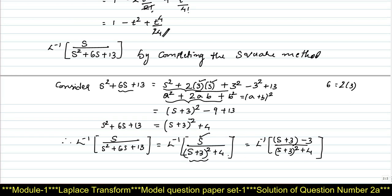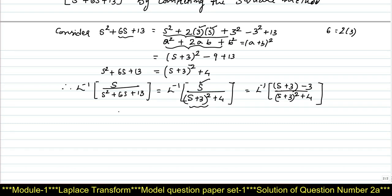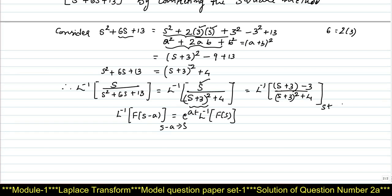We have the shifting property: L inverse of f(s - a) = e^(at) × L inverse of f(s). Here we have (s + 3), meaning s - (-3), so a = -3. We can write this as e^(-3t) × L inverse of (s - 3) / (s² + 4).